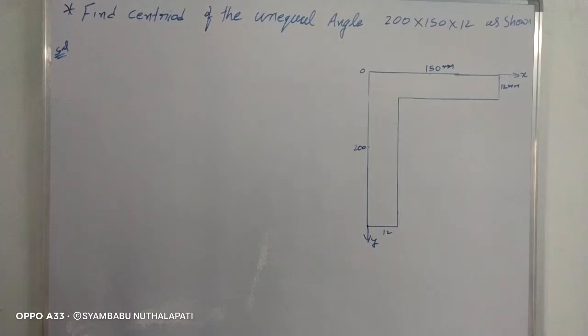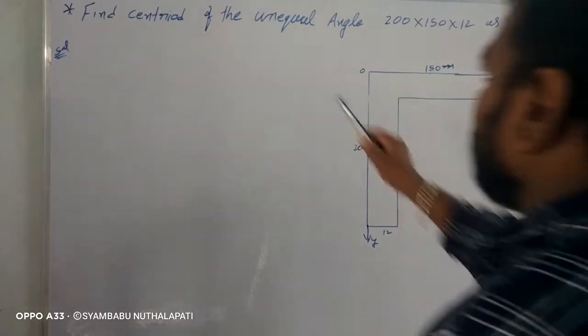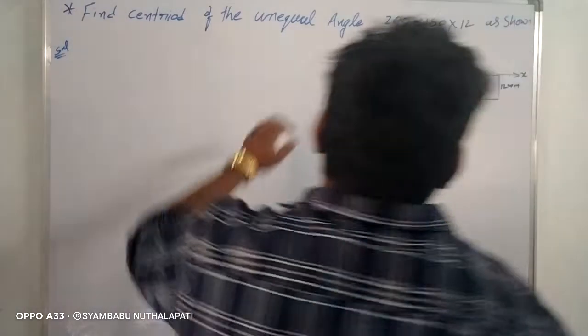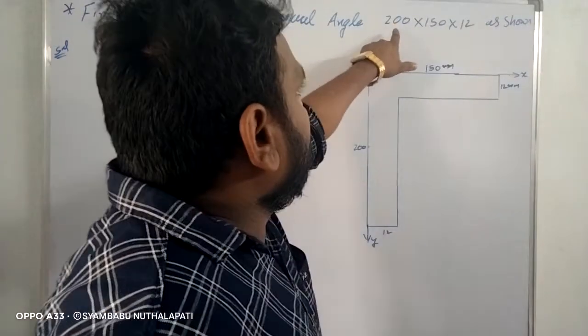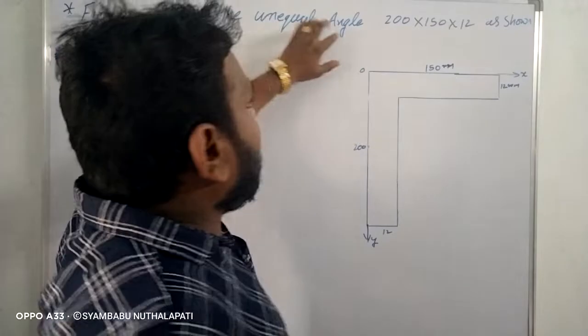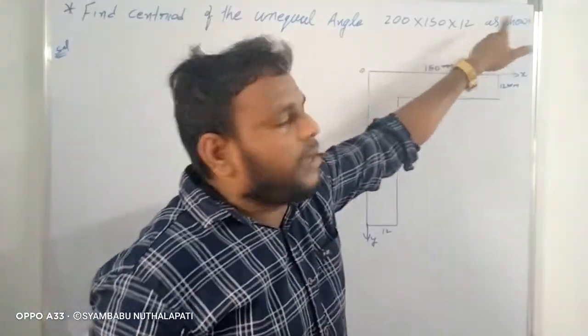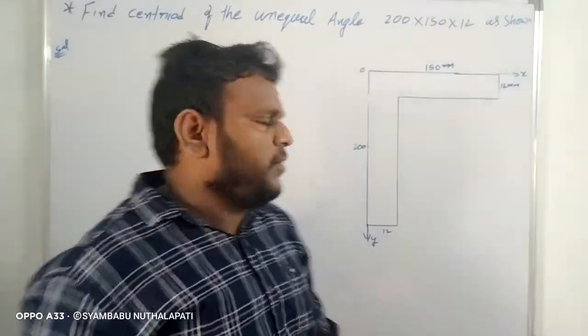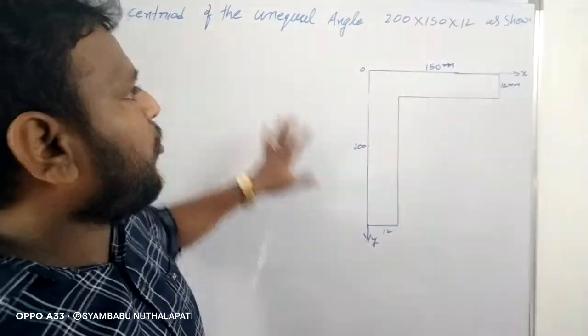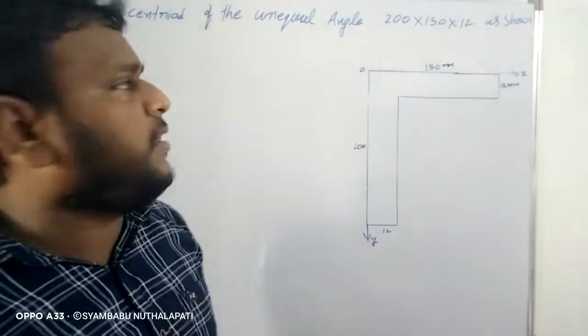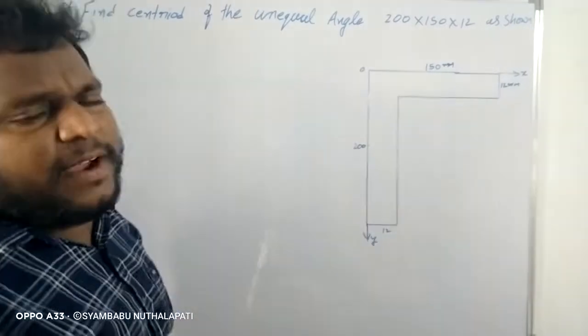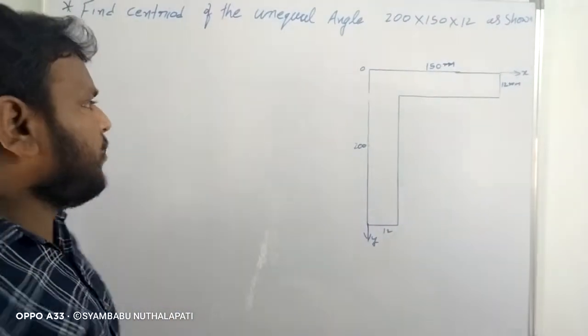I learned a problem. Find centroid of unequal angle 200, 150, 12 as shown in the figure. We will find the centroid.